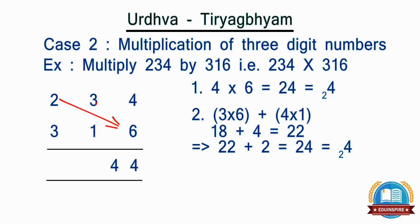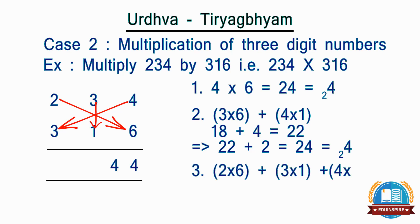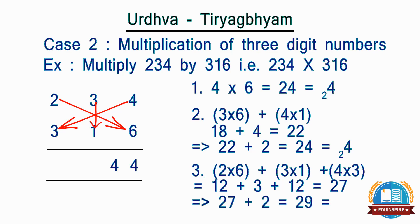Step 3: take all 3 digits of the numbers and multiply diagonally and vertically as shown on the screen, i.e. 2 by 6, 3 by 1, and 4 by 3. The sum of which becomes 27, and add the carried over number, i.e. 2, to it. So the total becomes 29. We will retain 9 as the third digit of the answer and carry 2 to the left.